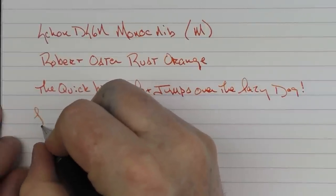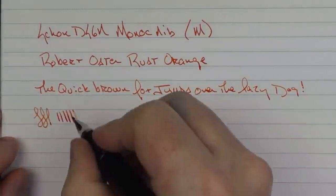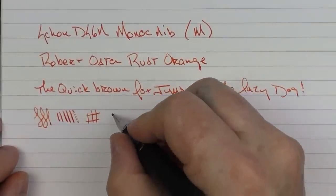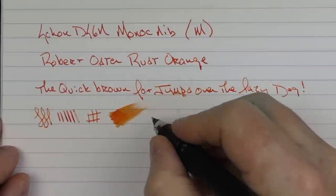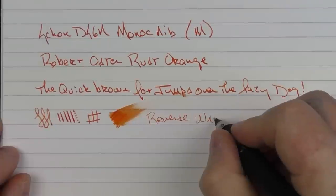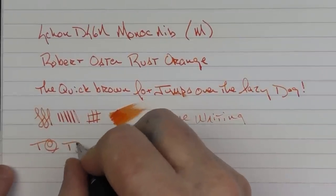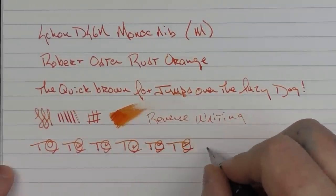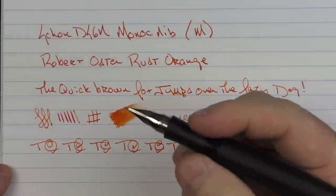This is a very stiff nib. You're going to get virtually no line variation at all. Side to side there's not going to be much. The ink flow for this pen is decent. And in regard to reverse writing, I've never tried it reverse writing. Oh, it's very smooth. But then in regard to some fast writing, the feed has no problem in keeping up.